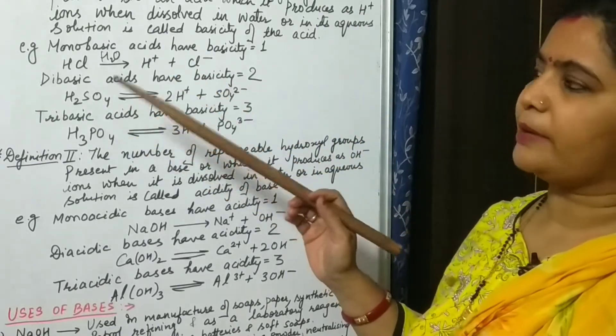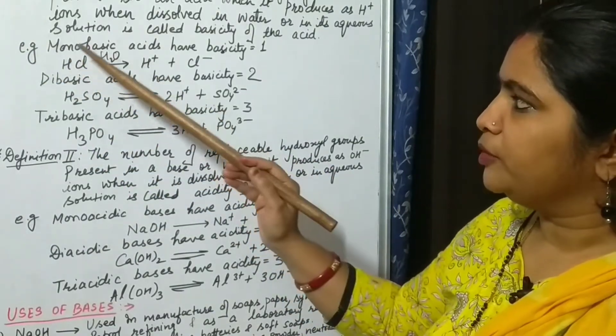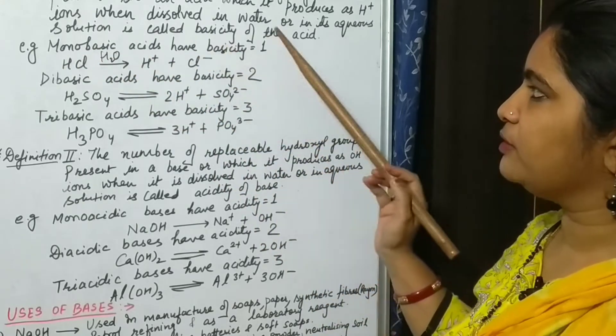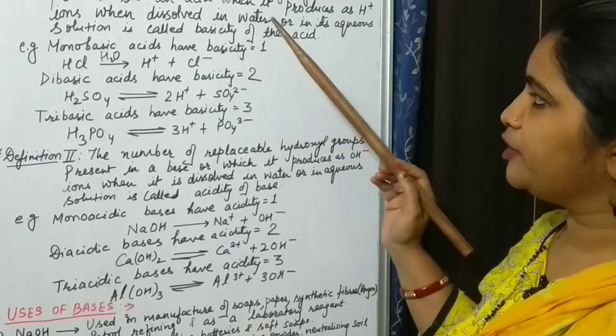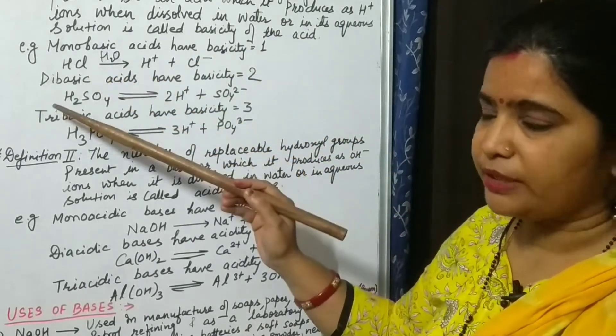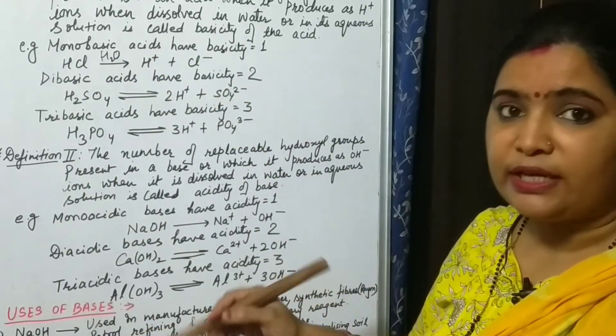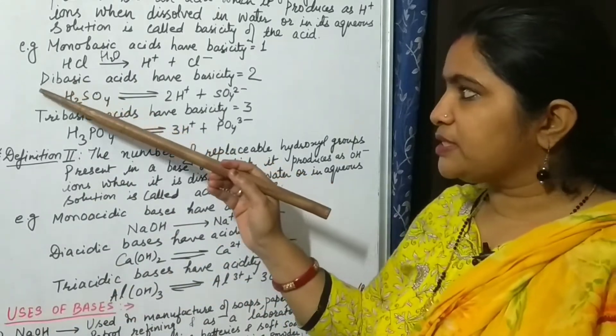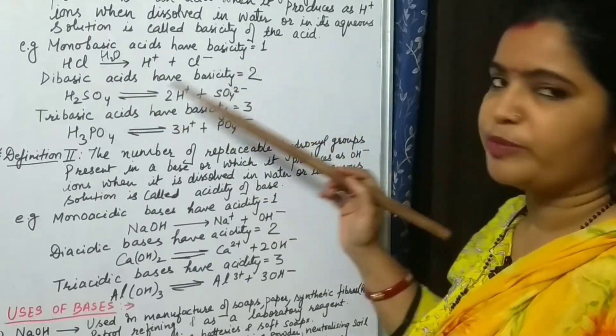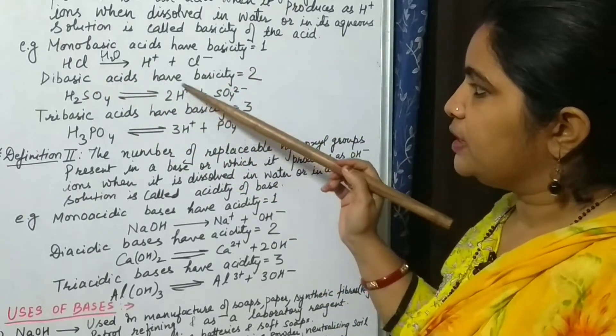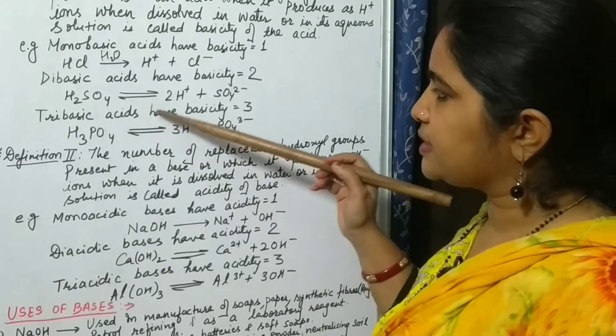We will see how it happens by taking some examples. Here I have already written. First, monobasic acids have basicity one. Why am I telling you basicity one? Because HCl has capacity to liberate only one H+ ion in aqueous medium. Next, dibasic acids have basicity two. Why two? Because it produces two H+ ions.